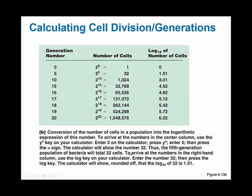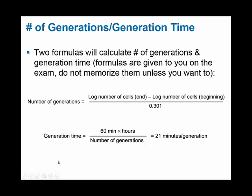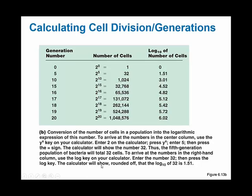The keystrokes for obtaining the log base 10 of the number of cells are shown at the bottom. To get these log 10 values, use the log key on your calculator. First enter the starting number of cells — for example, 32 — then press the log key. The calculator will show, rounded off, that the log base 10 of 32 is 1.51. You can test your calculator out with these calculations.